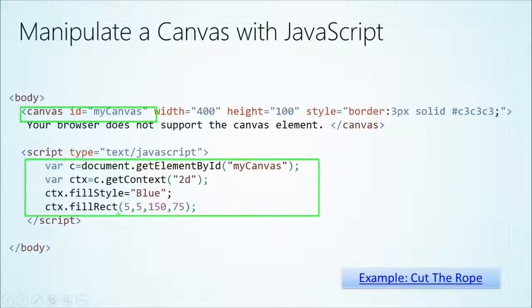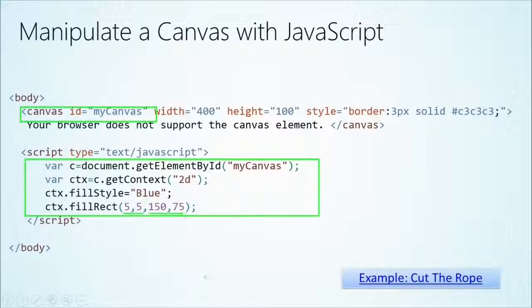The fill rectangle method takes four attributes. It's going to take the XY position on the screen and then also the width and the height. And that's just going to define the space and fill it with blue.